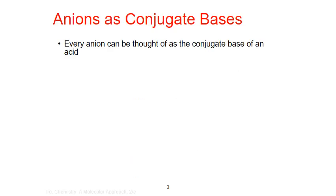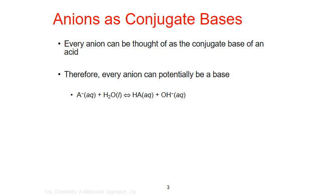Every anion can be thought of as the conjugate base of an acid, and therefore has the potential to act as a base in solution. As a conjugate base, the anion can react with water and extract a proton to form a hydroxide ion. In the process, it will also form the primary acid in its associated acid-conjugate base pairing.